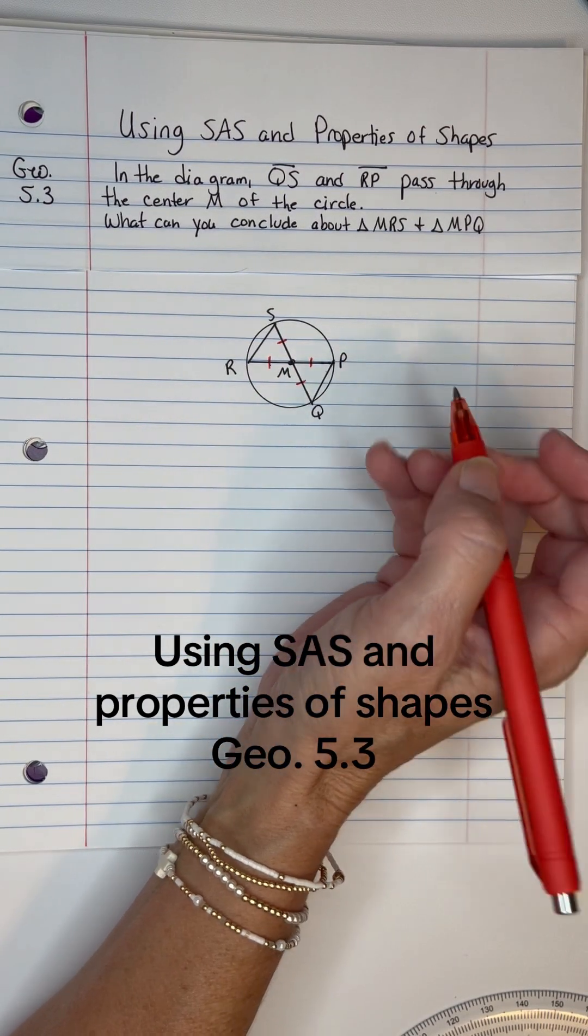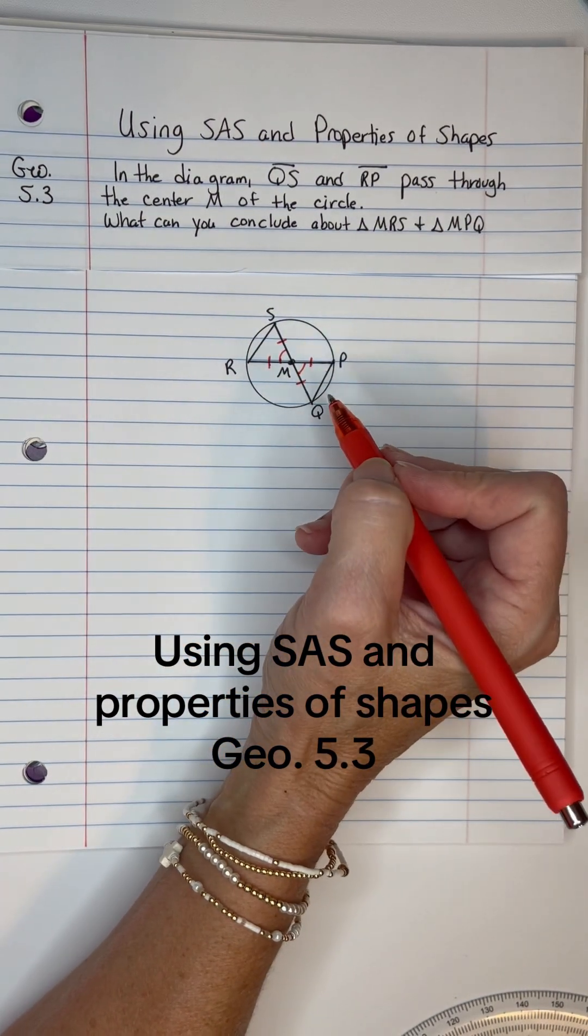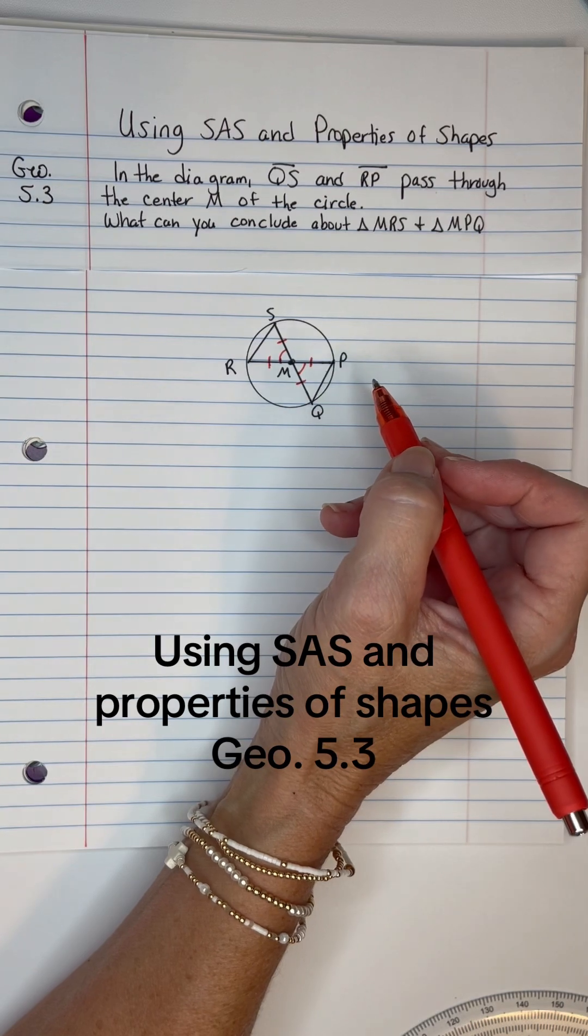Now another thing that we can mark up is this angle and this angle because they are vertical angles and vertical angles are congruent. We learned that earlier.